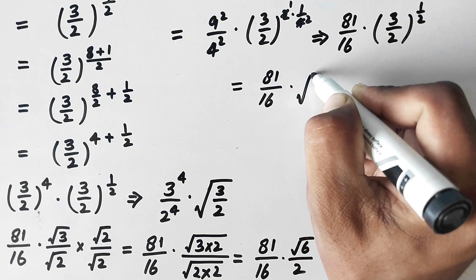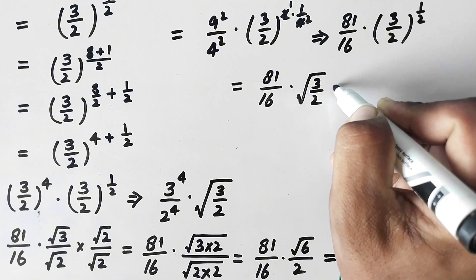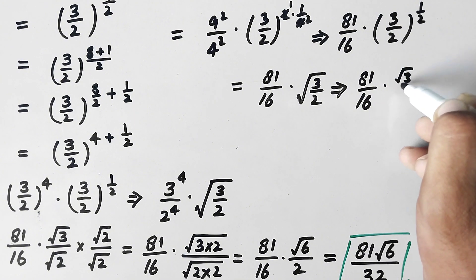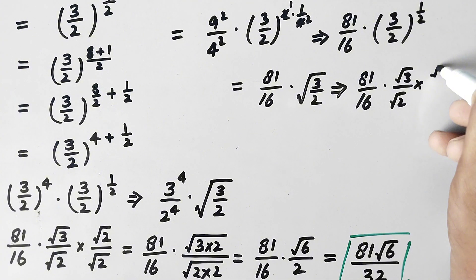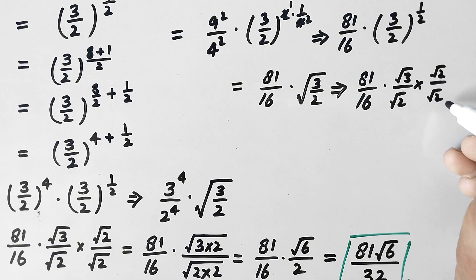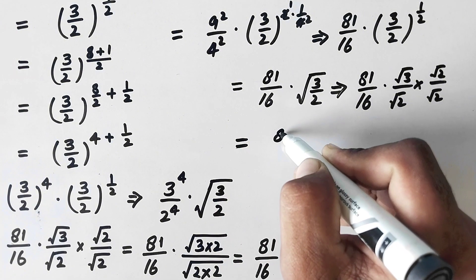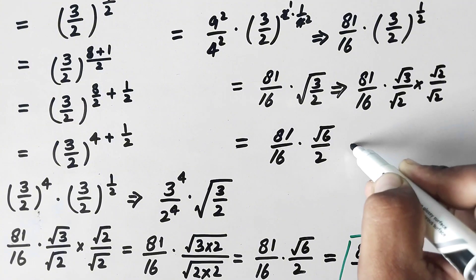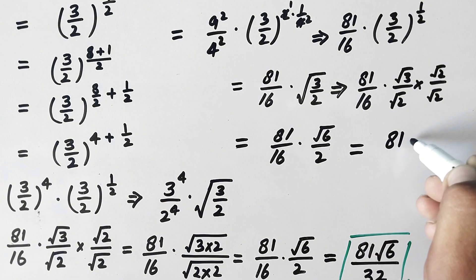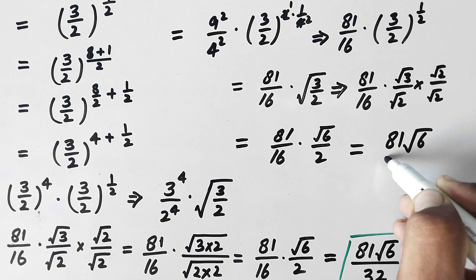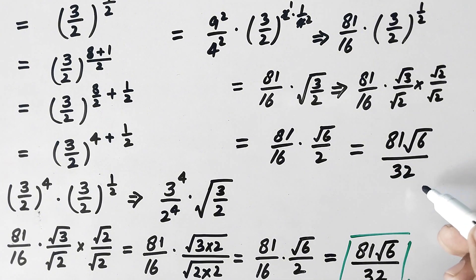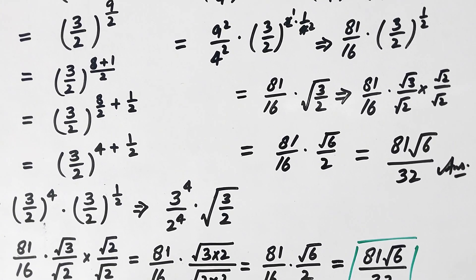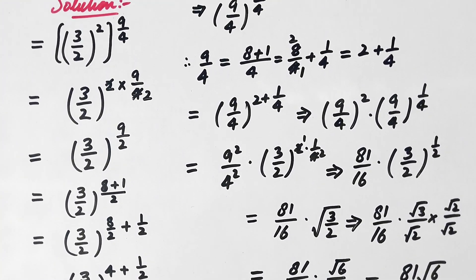Now it can be written as 81 over 16 times square root of 3 over 2, that will be 81 over 16 times square root of 3 over square root of 2. Here we will multiply it with square root of 2 divided by square root of 2, so now here we will get 81 over 16 times square root of 6 over 2, that will be equal to 81 times square root of 6 over 32. That is the same answer. I hope you liked the video — please subscribe to my channel for more videos. Thanks for watching, take care, bye.